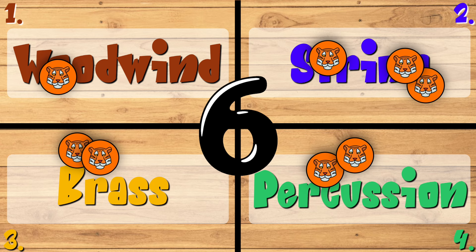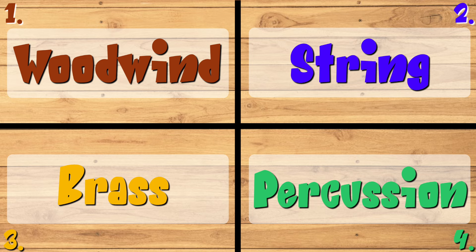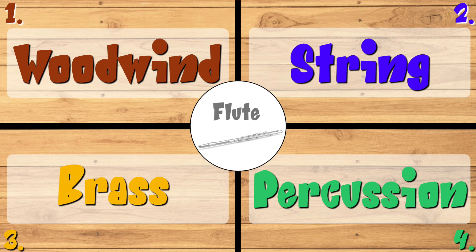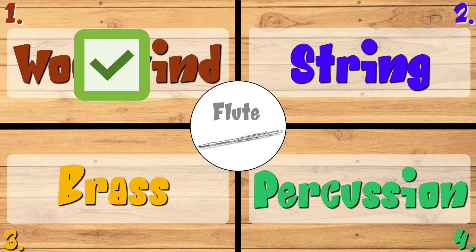Find corner one, two, three, or four. Which family is this instrument a part of? Let's listen again. Show with your fingers the family corner the instrument is in. The flute is part of the woodwind family. If you are in the woodwind family corner, sorry, you are out.